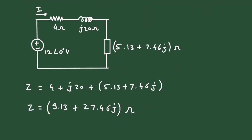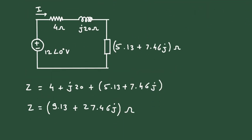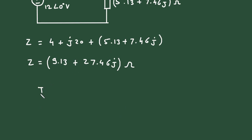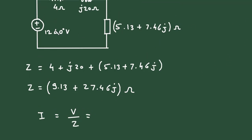Now we got the value of impedance and we also have the value of voltage. We have to find the current value. So i is equal to V upon Z. The value of voltage is 12 at an angle 0 degree divided by impedance Z.